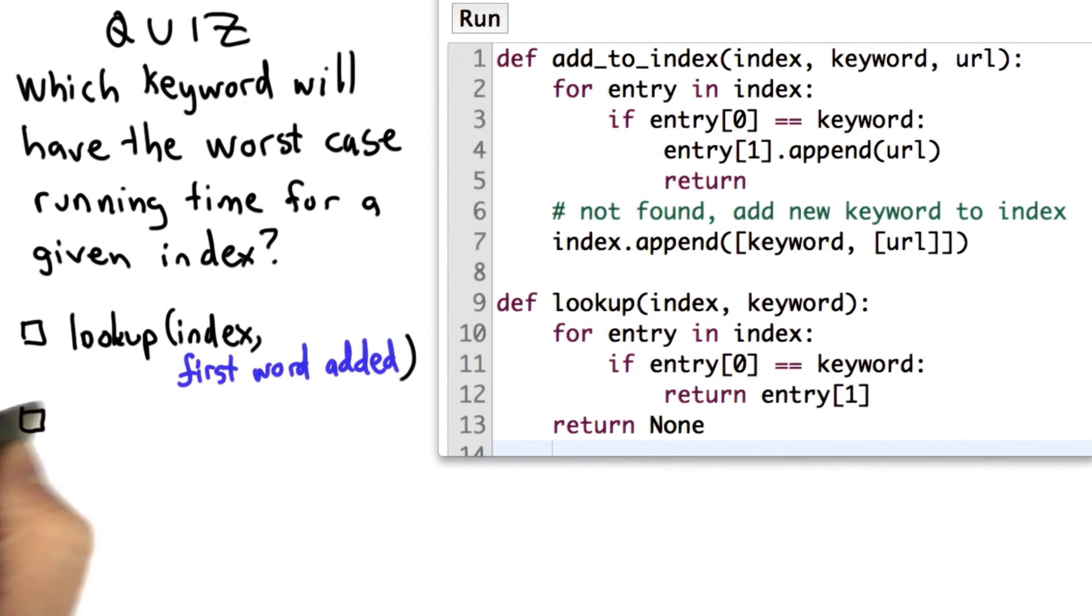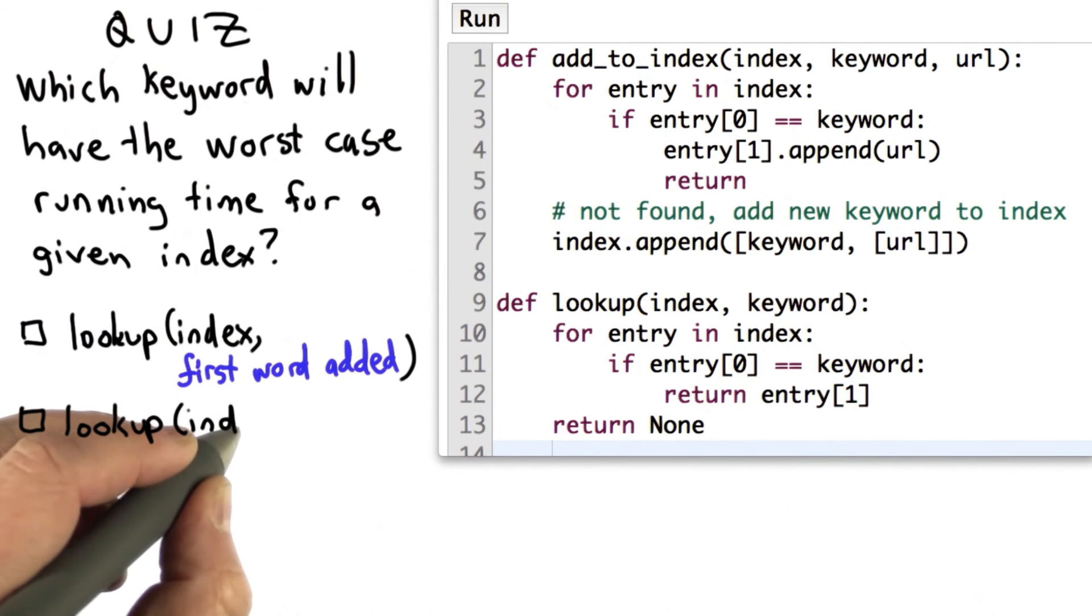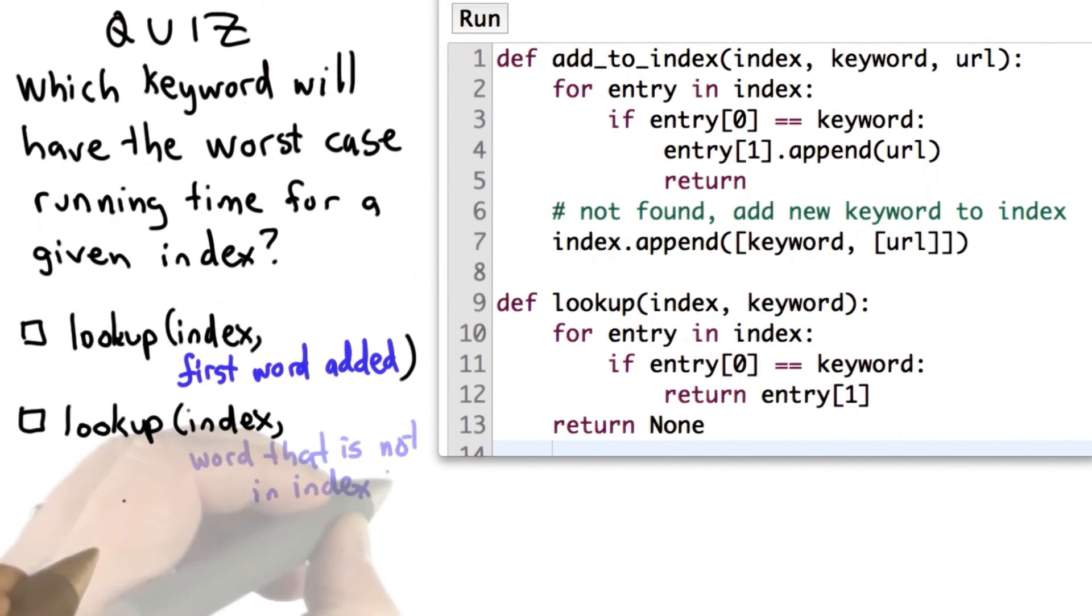The second choice is doing lookup, passing in the index, and a word that is not in the index. And the third choice is calling lookup, passing in the index, and as the second input, passing in the last word that was added to the index.